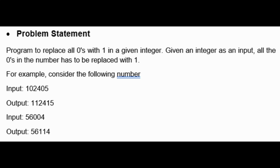You can understand it by the example. Consider the following number - input equals to some value, and the output would show all zeros replaced with the number 1. Another example: input equals to 5 6 0 0 4, so the output would be 5 6 1 1 4.